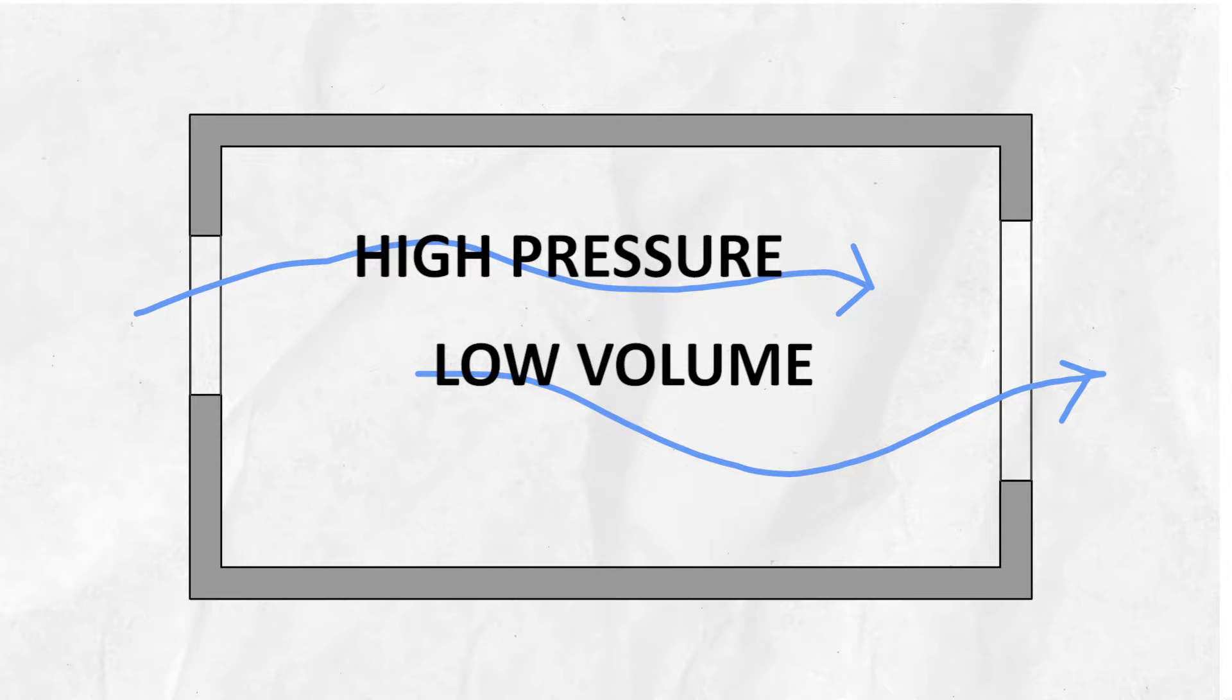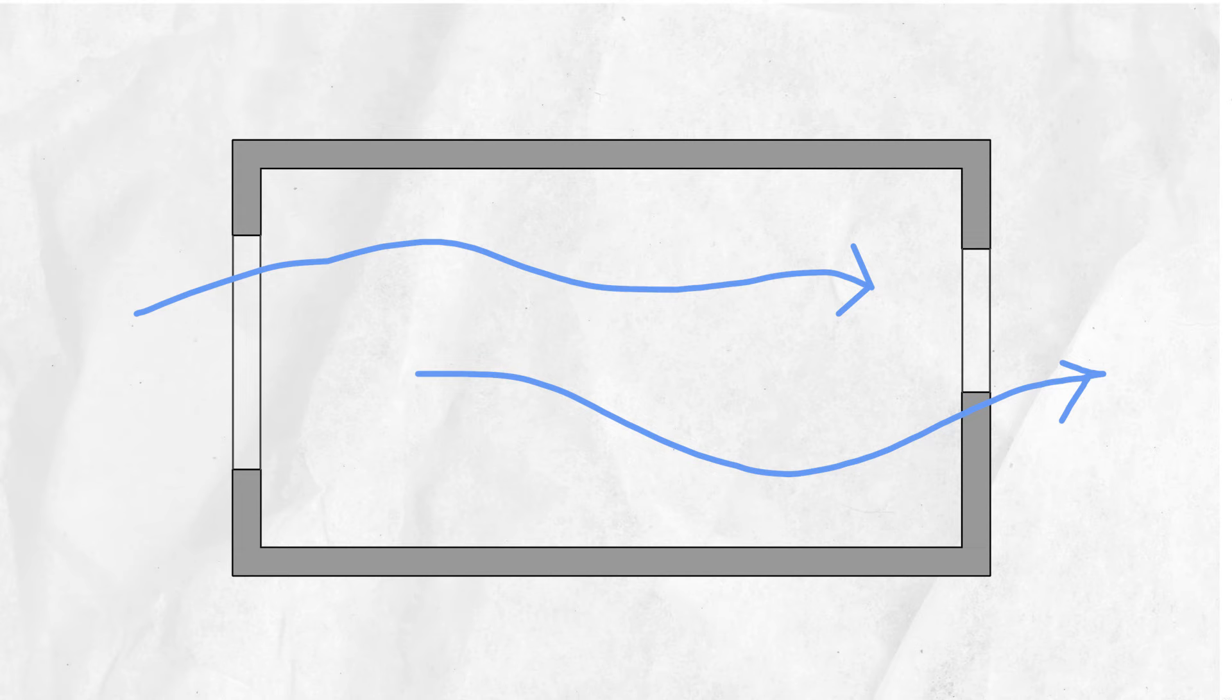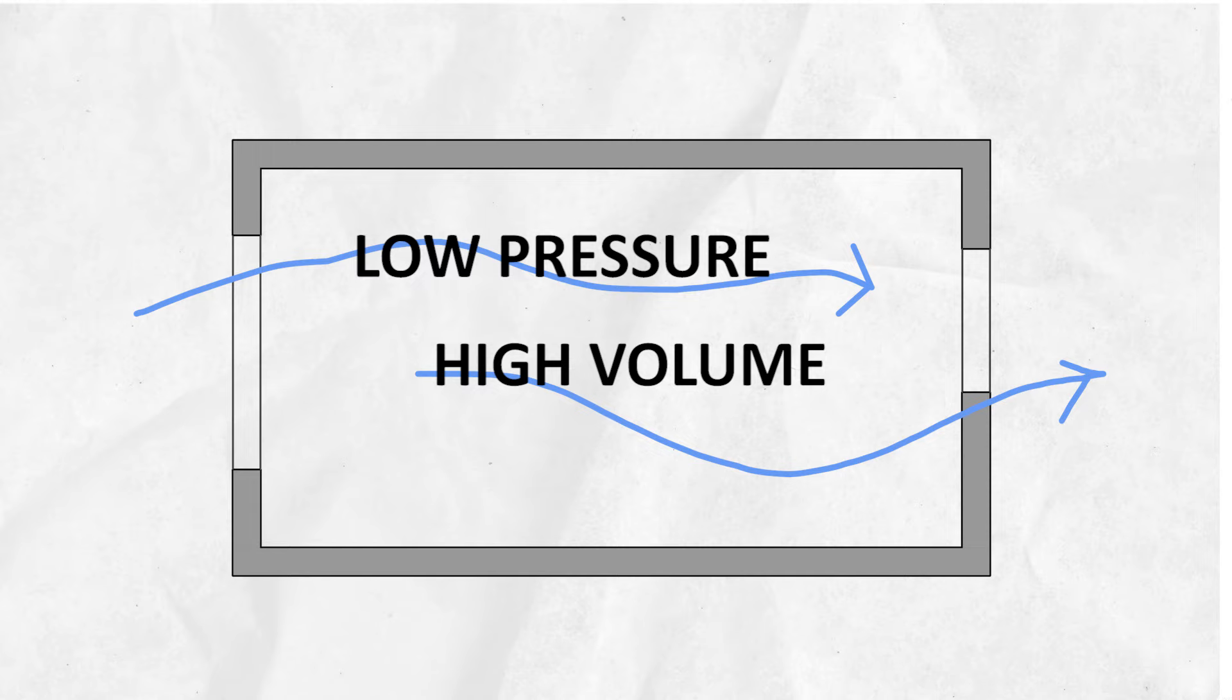When the inlet opening is large, the air velocity through it will be less, but the volume of air passing will be higher. When wind direction is not constant or when airflow through the whole space is required, a larger opening will be preferable.